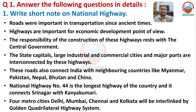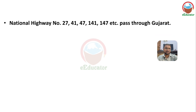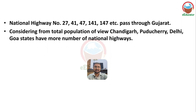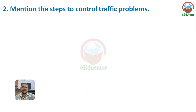National highway numbers 27, 41, 47, 141 and 147 pass through Gujarat. Concerning total population ratios, Chandigarh, Pondicherry, Delhi and Goa states have the major numbers of national highways relative to population.